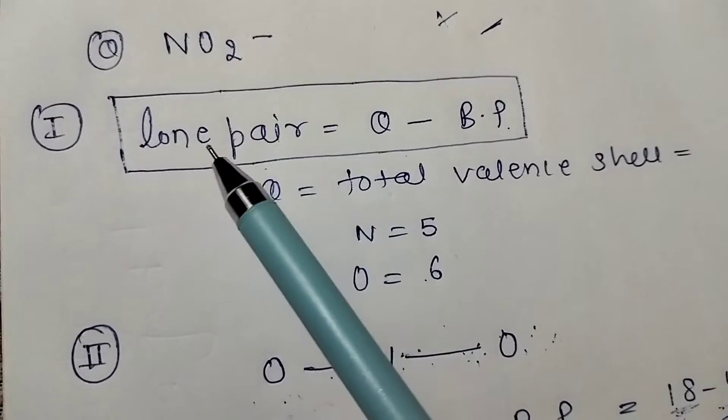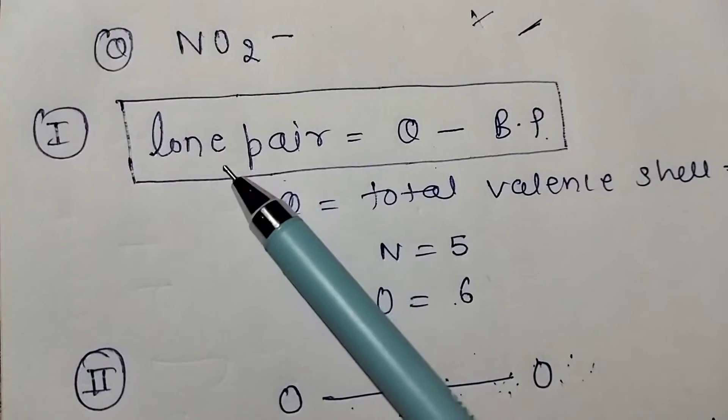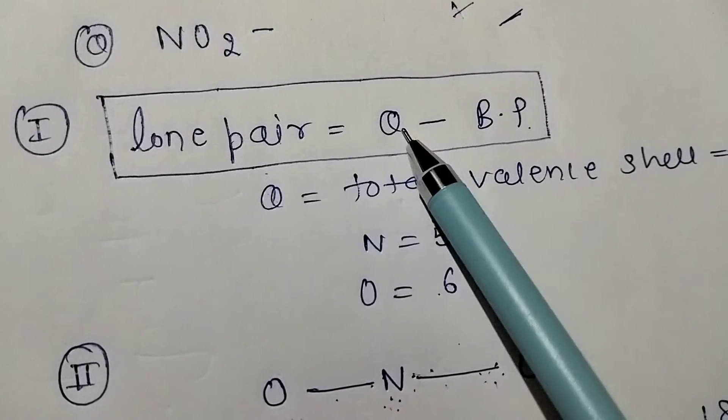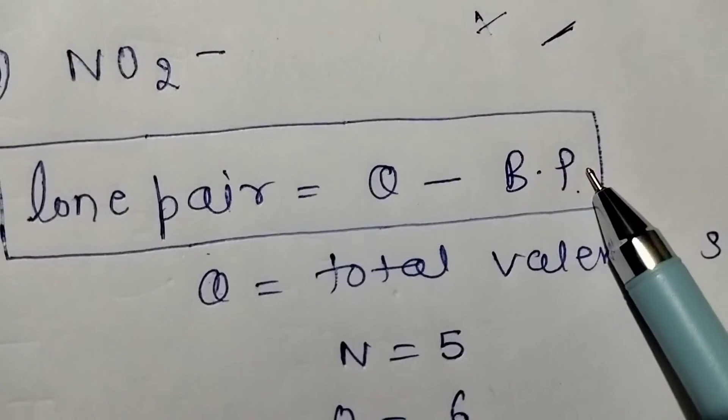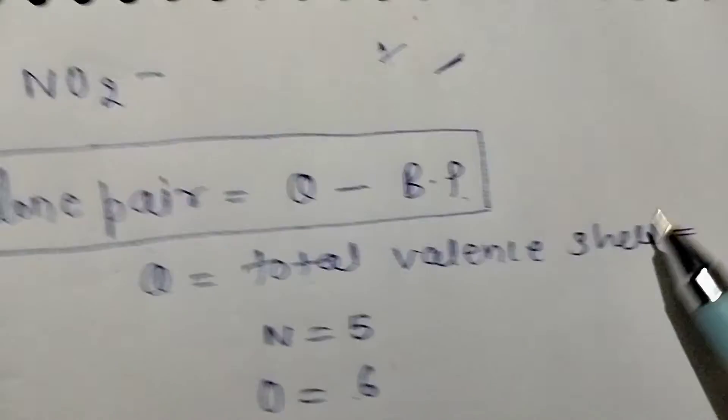So first of all, with the help of formula, we will calculate. Formula is that lone pair equals theta minus bond pair. What is the meaning of theta? Theta is the total valence shell.